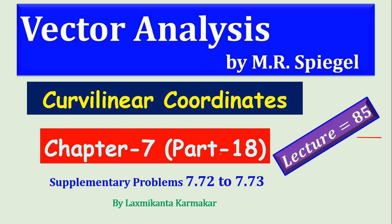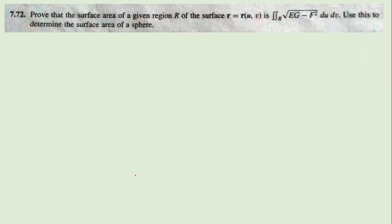In this video, we want to solve the supplementary problems 7.72 to 7.73 of chapter 7, which consists of the curvilinear coordinate system. If you already covered the previous lecture, you know the curvilinear coordinate system very well. Let's come to question number 7.72, which says: prove that the surface area of the given region R of a surface, denoted by two variables of the surface, follows this formula.